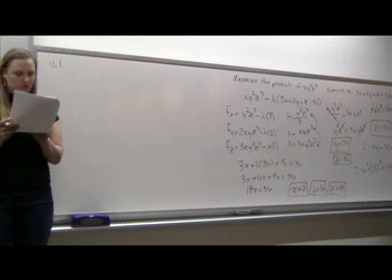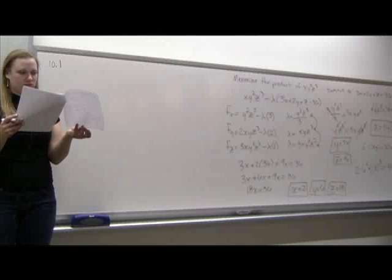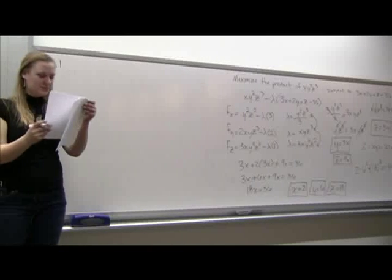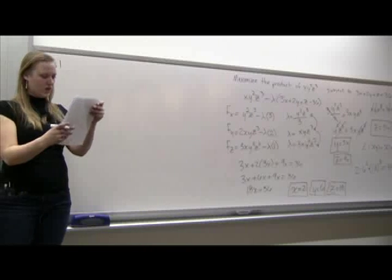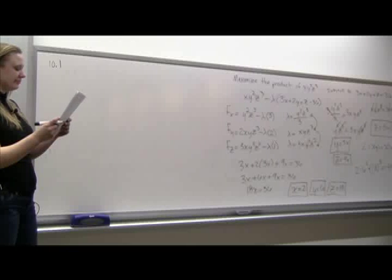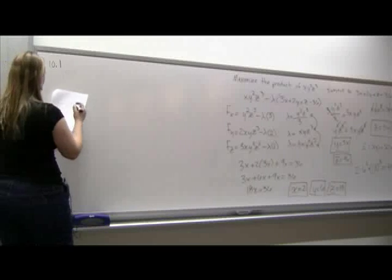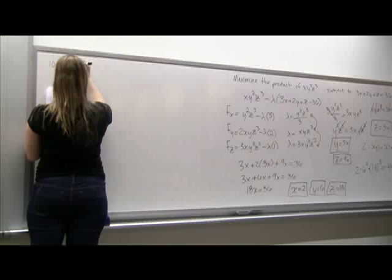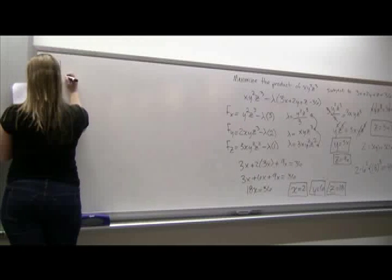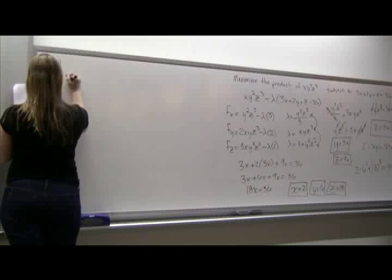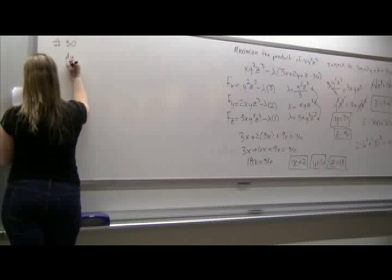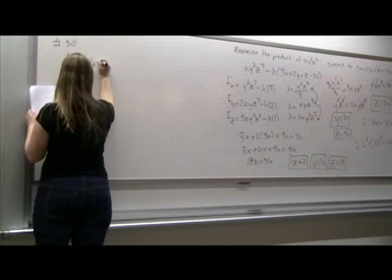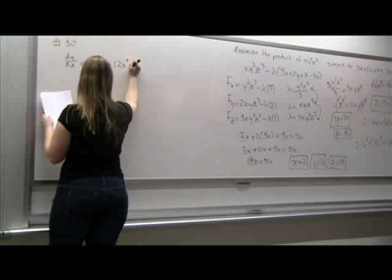I'm going to do one that you'd struggle with. I'm just going to do a couple. I'm doing number 30 from the practice test. dy/dx equals 6xy minus 12x squared y.